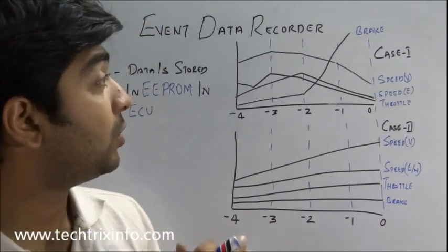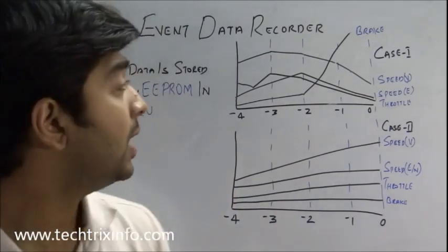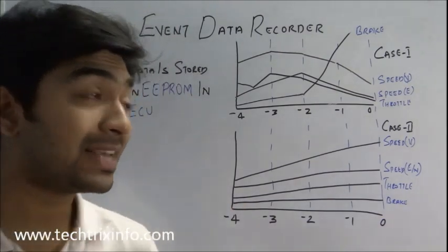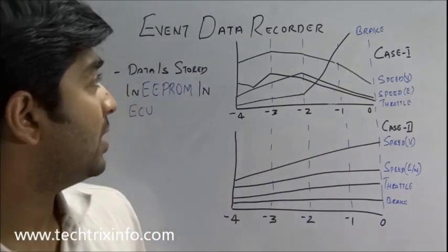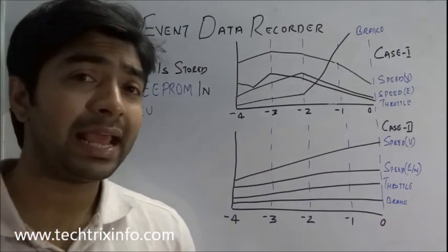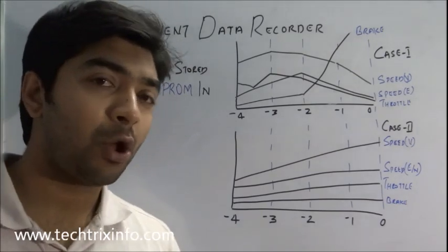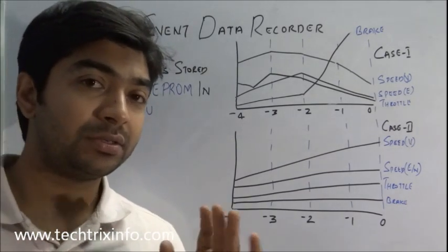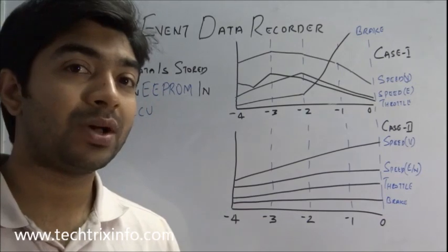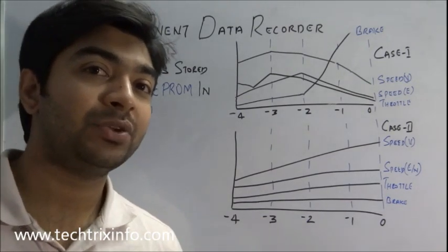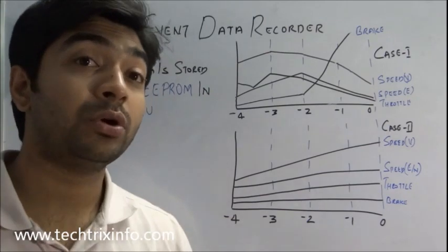The same system we are going to have in automobiles. It is currently under construction and some of the modern vehicles have this system. The system mainly helps the insurance companies and the police department to get knowledge that the accident was purposefully created or was it really an accident, or the insurance company can make sure that the claim has to be honored or not by looking into the status of the accident.